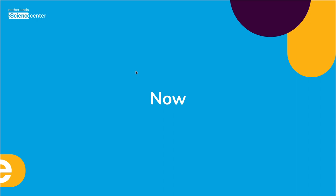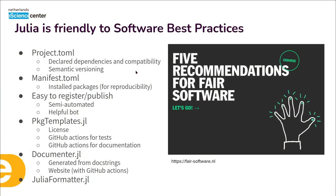Now, working as a research software engineer at the Netherlands eScience Center, do I still recommend Julia? Yes — Julia is very interesting for much of what we do at the center. The eScience Center is very concerned about FAIR software, open science, and reproducibility, and Julia is very friendly to software best practices. It kind of forces you to follow some of them. For instance, every Julia environment has a Project.toml where you declare dependencies and can add version compatibility constraints. Julia uses semantic versioning for all registered packages, including your own.